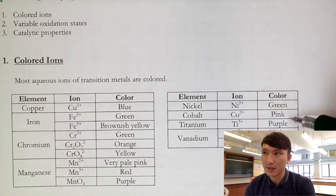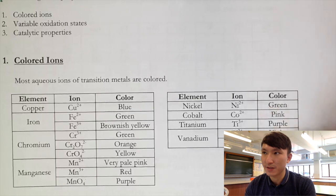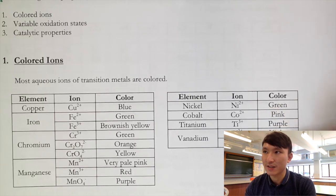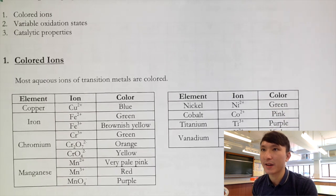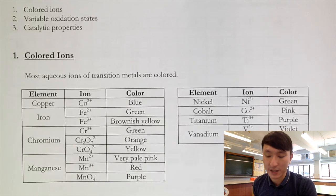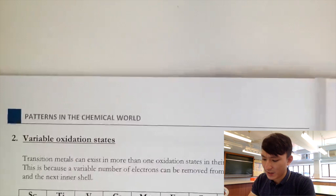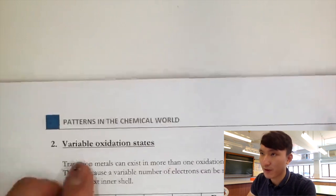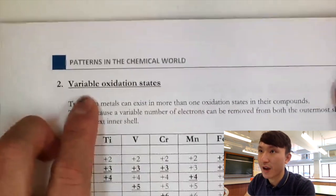More examples of colored transition metal ions: titanium(III) is purple, vanadium(II) and vanadium(III) are green and violet respectively. It is important to recognize and memorize some of these colors.